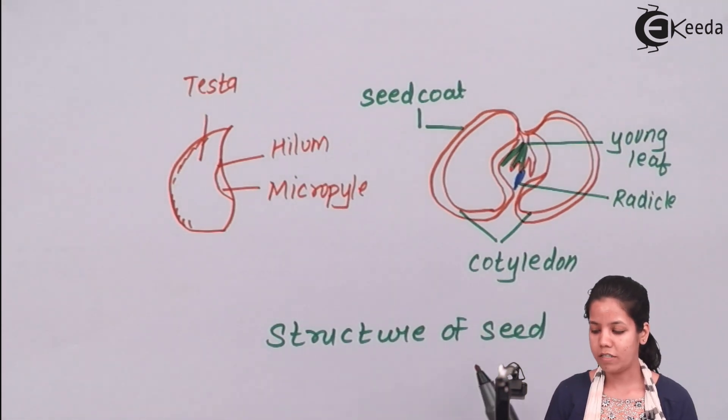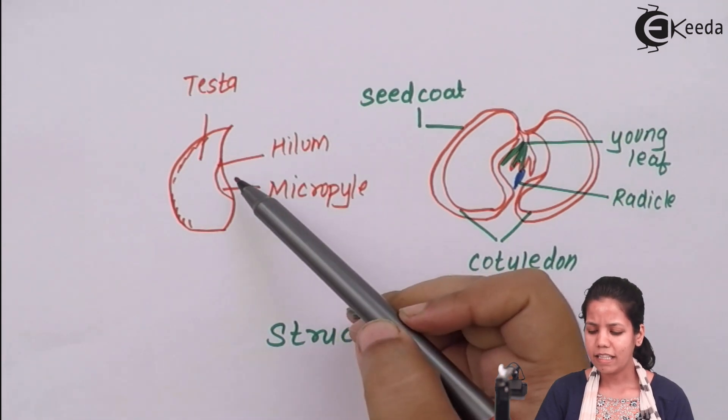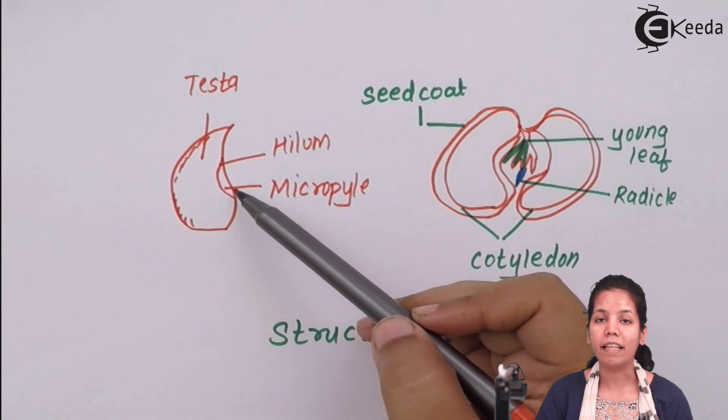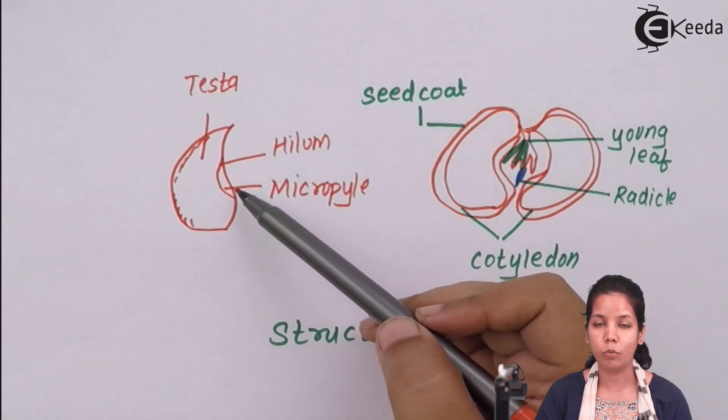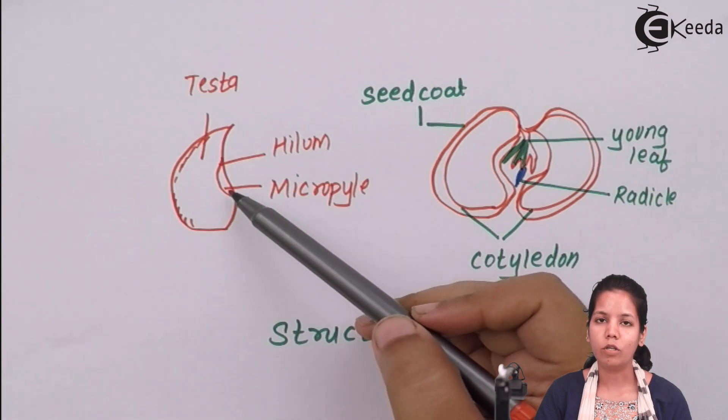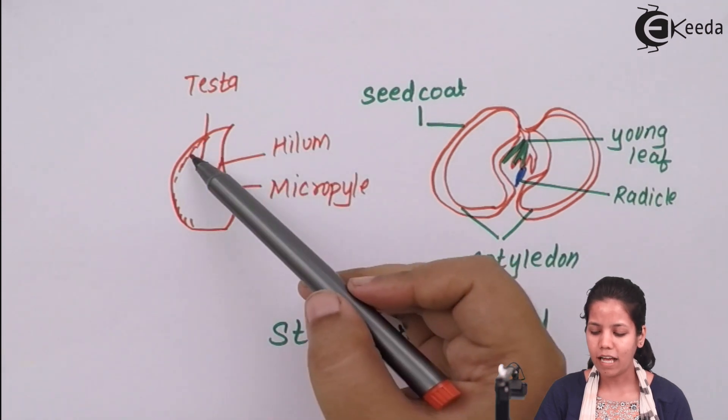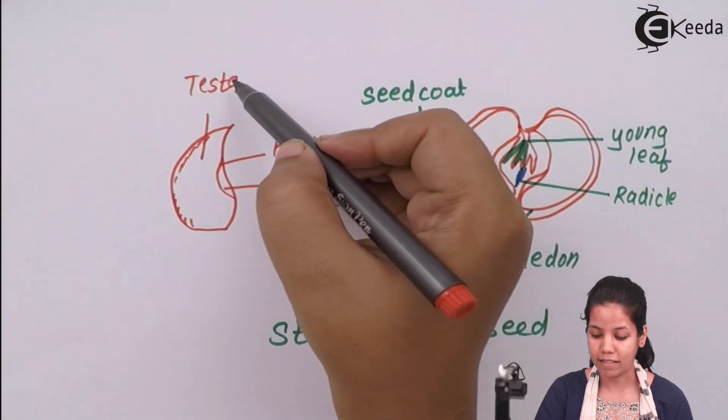This diagram represents the structure of a seed. Inside this structure we see that there is micropyle, which is the region through which gametes enter inside the ovary during sexual reproduction, guarded by a layer called hilum. The outer region is termed as testa.